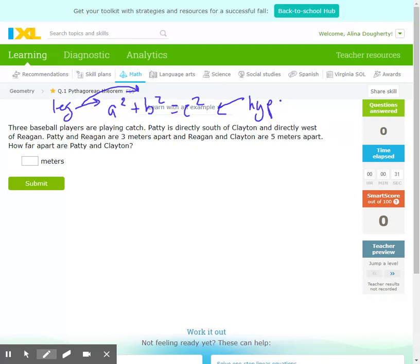Three baseball players are playing catch. Patty is directly south of Clayton and directly west of Regan. So Patty is west and south.